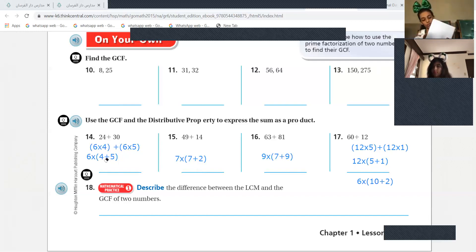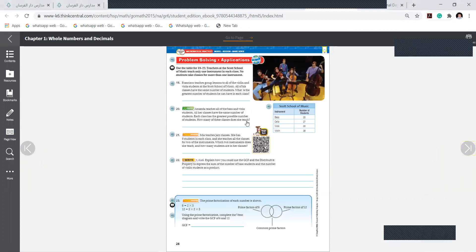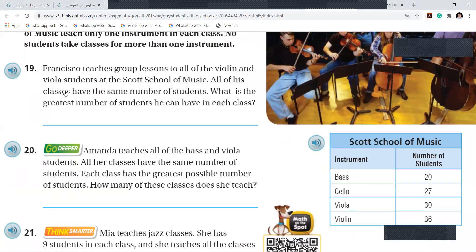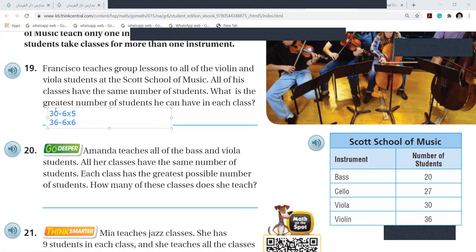Now next lesson, I mean next page, turn to page number 27, next page, number 26. Practice: Francisco teaches group lessons to all the violin and viola students at the Scott School of Music. All of his classes have the same number of students. What is the greatest number of students he can have in each class? 30 and 36.